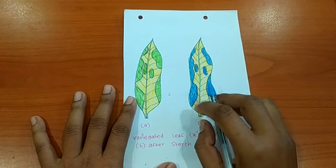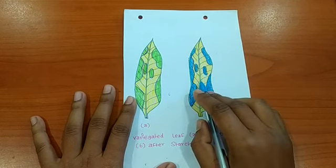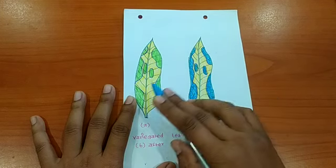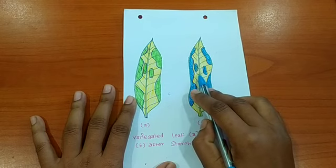Now, if we observe the color of the leaf, then we will find the color of the leaf which was green first now appears as blue.